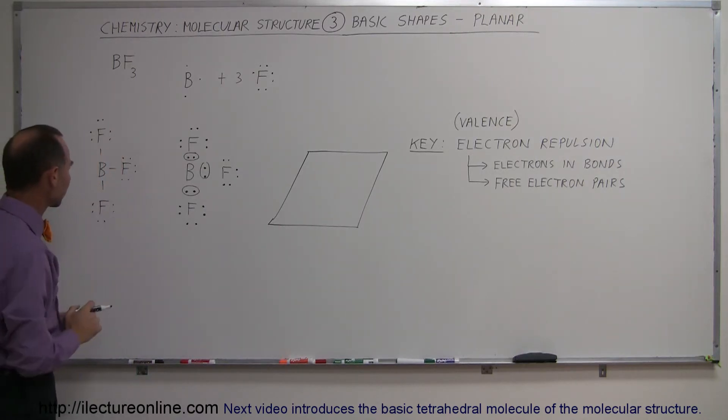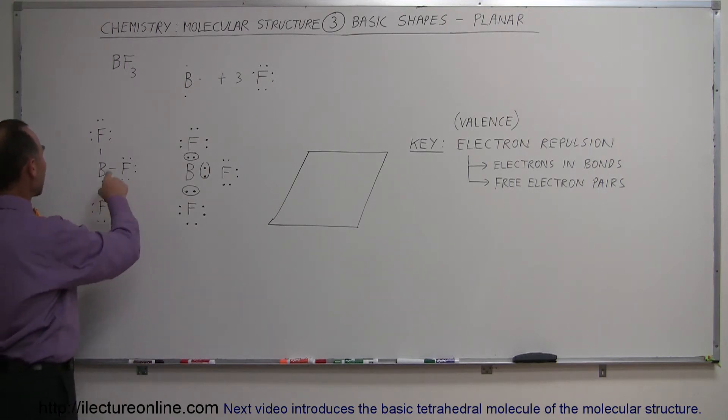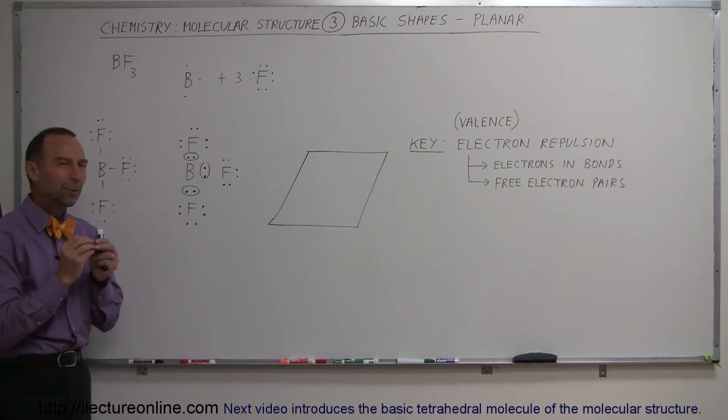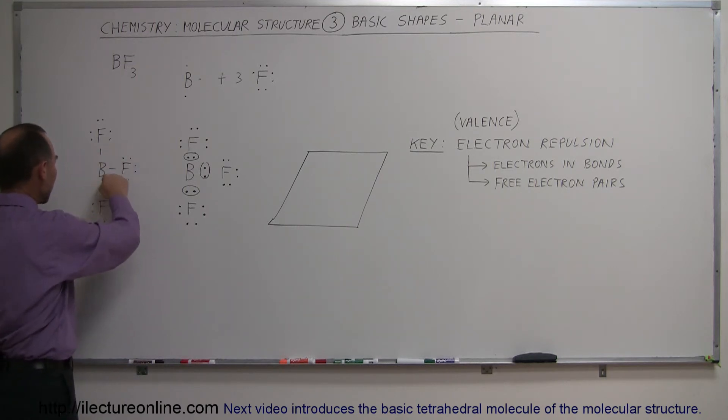So that would be the proper Lewis structure. Now, how does it look physically? Well, notice that we have these electrons here tied up in bonds and they repel each other. The electrons in the bonds between fluorine and boron will repel each other.